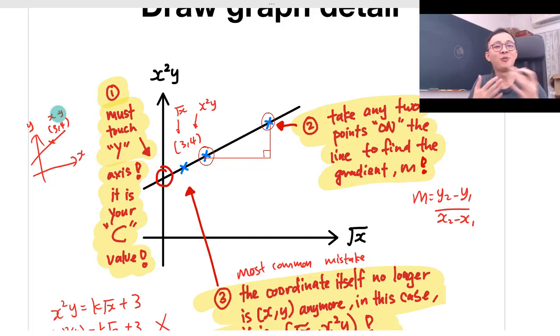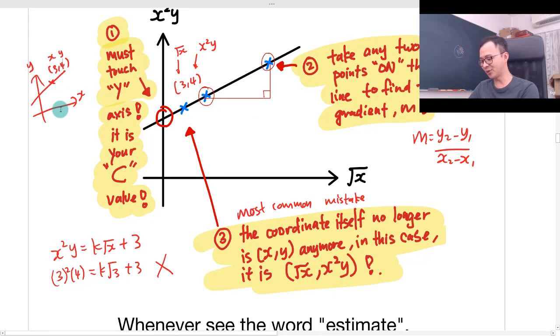You very much need to see what is your vertical axis and horizontal axis. So it's no longer X and Y, so you cannot plug in the X and Y like that. So this one is wrong. So the correct way is the whole thing equals to 4, equals to K square root X equals to 3 plus 3. Then K equals to 1 over 3.